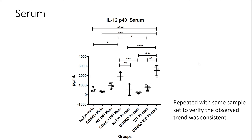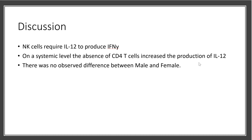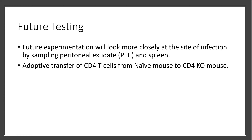These results were not what I had expected, so I decided to repeat the experiment using the same sample sets to check whether there may have been an issue with the ELISA. The second set of data showed a very similar trend. Based on this, I found that on a systemic level, the absence of CD4 T cells actually increased IL-12 production, contrary to my hypothesis. I did not observe any differences between male and female mice.